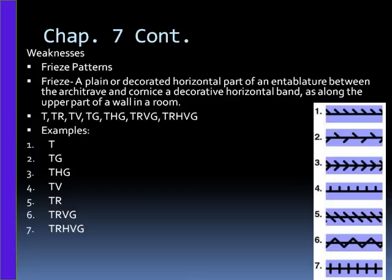Alright, we are now almost done. We are continuing with chapter 7 with the weaknesses. My weakness in chapter 7 was the frieze patterns. A frieze is a plain or decorated horizontal pattern of entablature between the architrave and cornice, a decorative horizontal band along the upper part of a wall in a room. The mathematical definition would be that it is a horizontal pattern that repeats using a series of transformations.